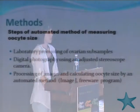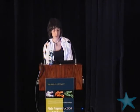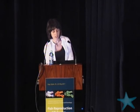In order to obtain data on oocyte size, we followed an automated method consisting of three main steps: preliminary laboratory processing of ovarian samples, mainly involving separating the oocytes; digital photography using an adjusted stereoscope camera; and processing the images to calculate oocyte size within a routine developed in the program ImageJ, which is a freeware program.